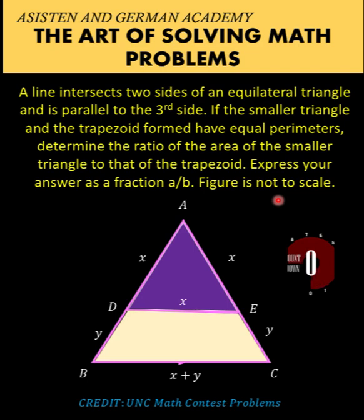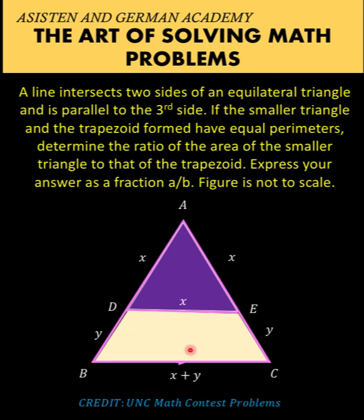Now let's solve this problem together. It is given that the perimeter of this equilateral triangle is the same as the perimeter of the trapezoid. Clearly from the figure, the perimeter of our equilateral triangle is 3X, because each side is X, and the sum of the three sides equals 3X.